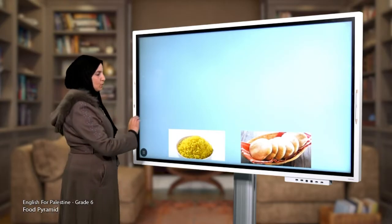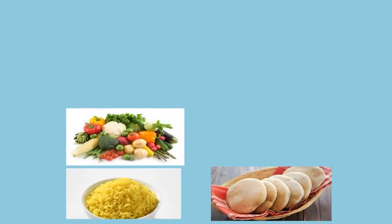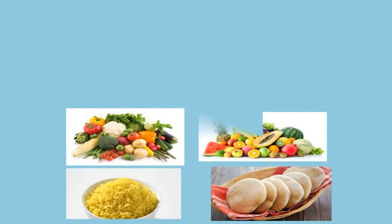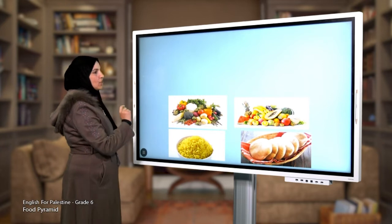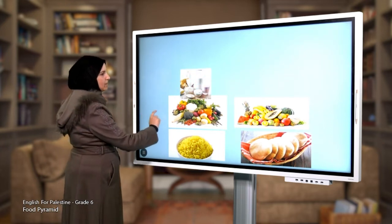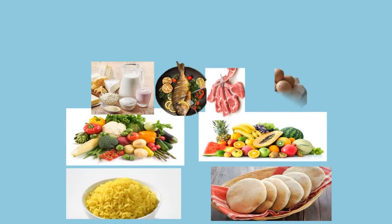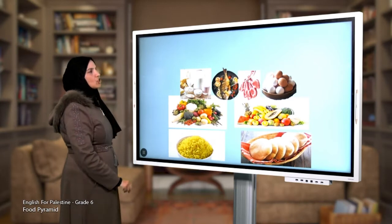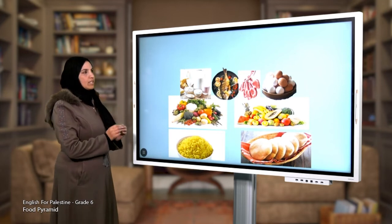Then we have the vitamins group which includes vegetables and fruit. Above the vitamins group we have the proteins group, such as milk, fish, and meat. Then we have the top of the food pyramid which includes unhealthy food.